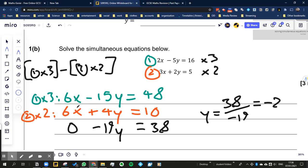So we can just do this and write this underneath. We can say 6x take away 6x is 0, minus 15y take away 4y is negative 19y. So we end up with minus 19y is equal to 38.